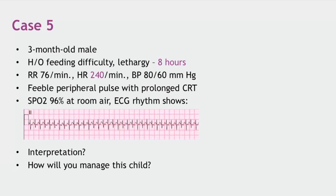Since this patient has prolonged CRT, low BP, and feeble peripheral pulses, we go for synchronized cardioversion at 0.5 to 1 joule per kg. If the patient were stable, adenosine would be the first-line treatment at 0.1 mg/kg, increasing to 0.2 mg/kg if there is no response.